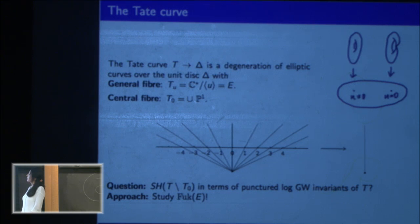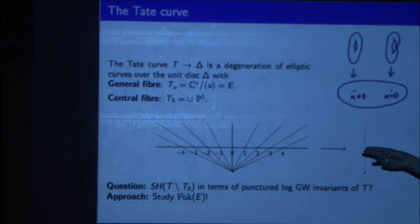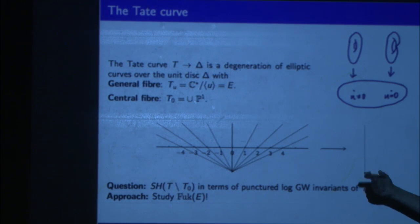So what's the Tate curve? The Tate curve is a degeneration of elliptic curves, and the central fiber is a chain of P1s you construct torically. You start with an integral affine manifold B, which is R in this case. The polyhedral decomposition is given by Z. You add these rays, and this defines the fan for the total space of a degeneration. There's a Z action on this fan, which induces an action on the total space. You take the quotient, and this gives you the total space of the Tate curve, which has general fiber elliptic curve and central fiber chain of P1s.